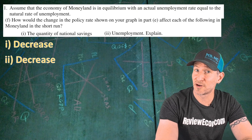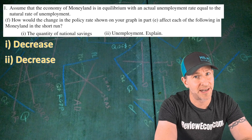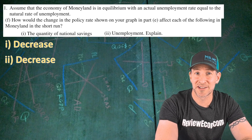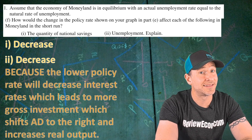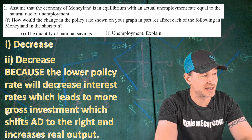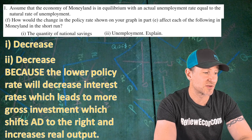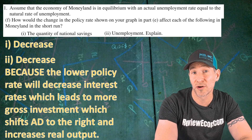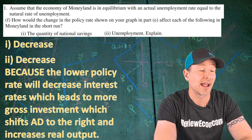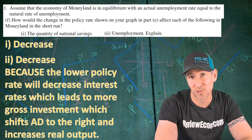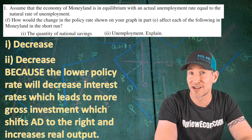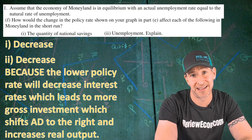The second point for part F comes from the correct explanation for F(ii). The explanation: decrease, because the lower policy rate decreases interest rates, which leads to more gross investment, which shifts aggregate demand to the right and increases real output. If you have an explanation like that, you get your last point.